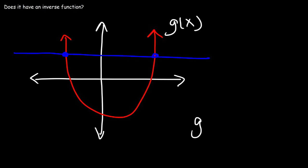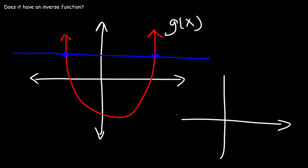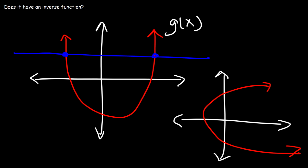It's going to look something like this. Notice that it does not pass the vertical line test. So therefore, the inverse relation is not a function. So we can say that g of x does not have an inverse function, because it's not a one-to-one function.